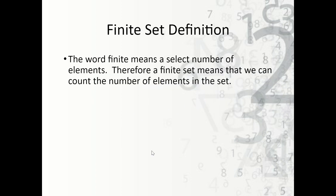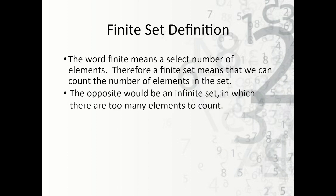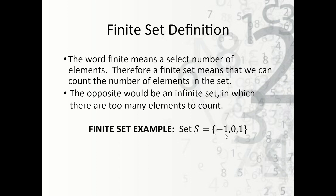Now, what does finite mean? Finite means a select number of elements. Therefore, a finite set means we can count the number of elements in a set. The opposite would be an infinite set, which means there are too many elements to count. An example of what this looks like is: S equals the set of negative one, zero, and one. These are the only values in the set and we can count them — there are exactly three elements. So that's a finite set.